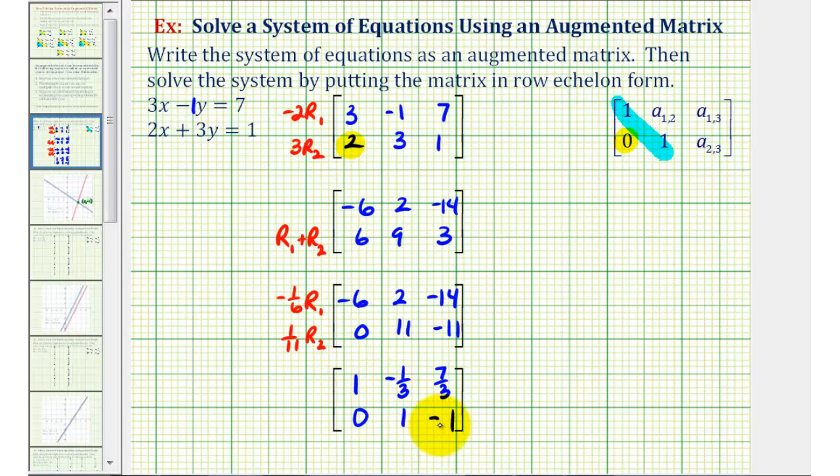So now we're going to write this back as a system of equations to solve the system. So using this first row, this is telling us that one x minus one-third y must equal seven-thirds, or just x minus one-third y must equal seven-thirds. The second row is telling us that zero x plus one y equals negative one, or y equals negative one.